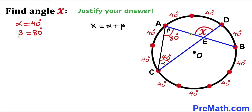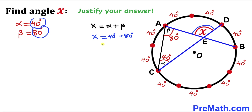Here's our final step. Let's go ahead and calculate angle X. We know X equals alpha plus beta. So X is going to be our alpha value of 40 degrees plus beta value of 80 degrees, giving us 40 degrees plus 80 degrees.